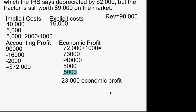That's all economic profit means. If it's positive, you did better than you could in the other option after all costs are taken into account. If it's negative, you did worse than you could have in that other option. And if it's zero, that's not bad — it just means you're doing exactly as well as you would in the other option.